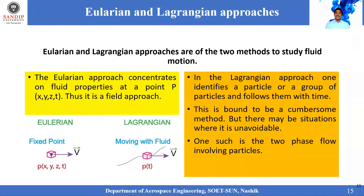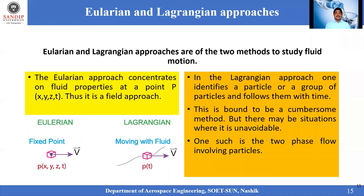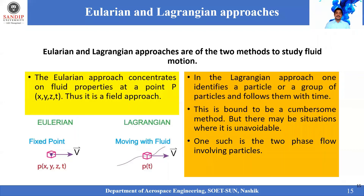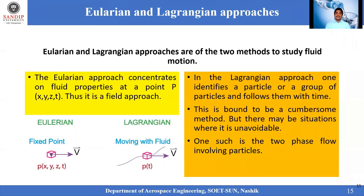For example, consider a fuel and air mixture: fuel is in liquid form and air is in gas form. When these two combine in the combustion chamber and get mixed by forming fine particles, in that case we cannot use the Eulerian approach — we prefer to go with the Lagrangian approach. Depending upon the problem, we choose which approach to use.